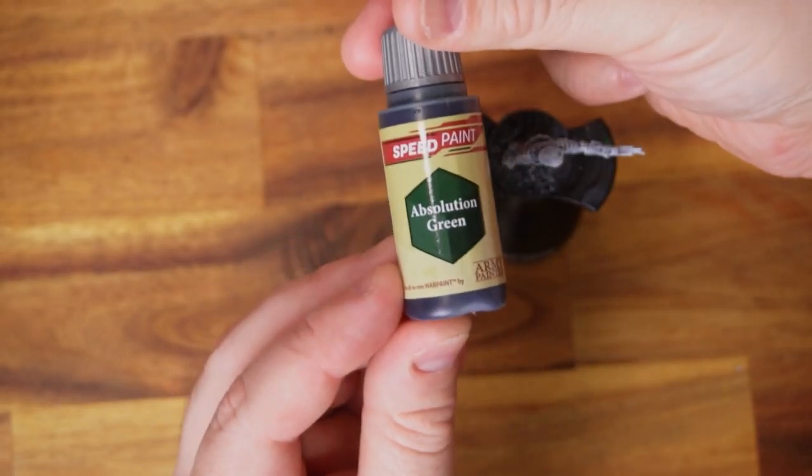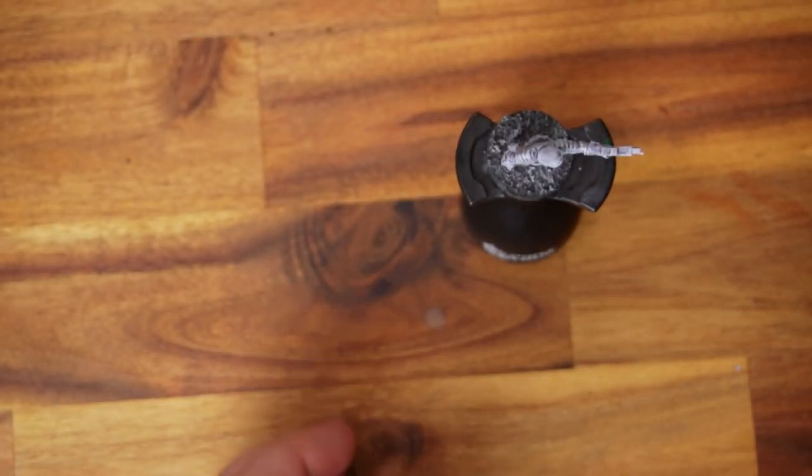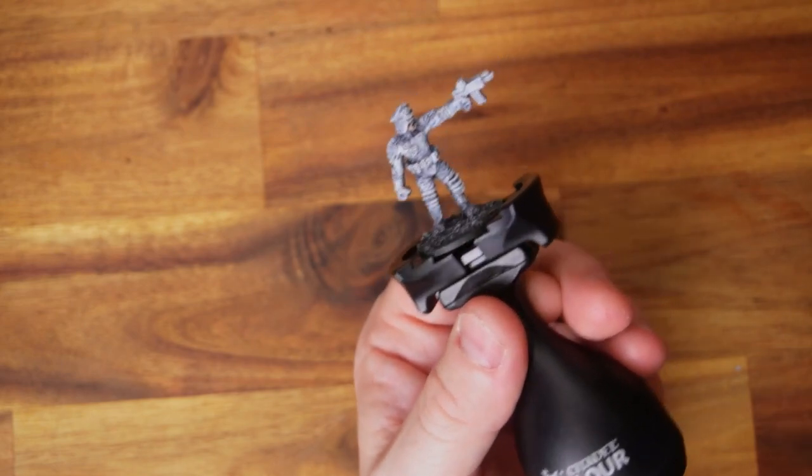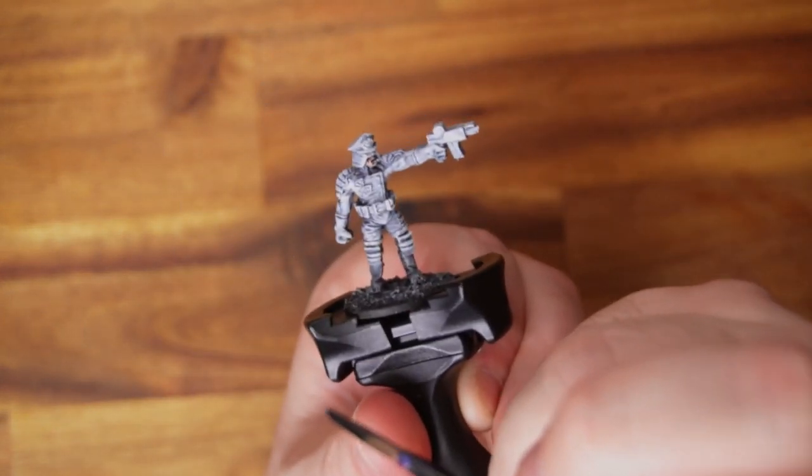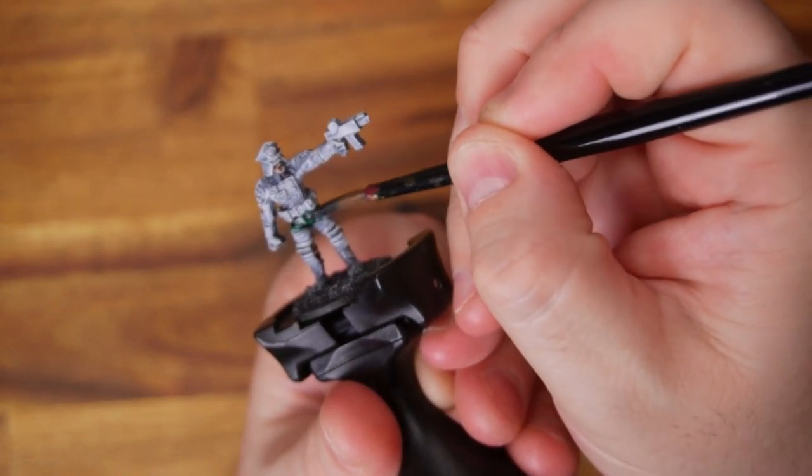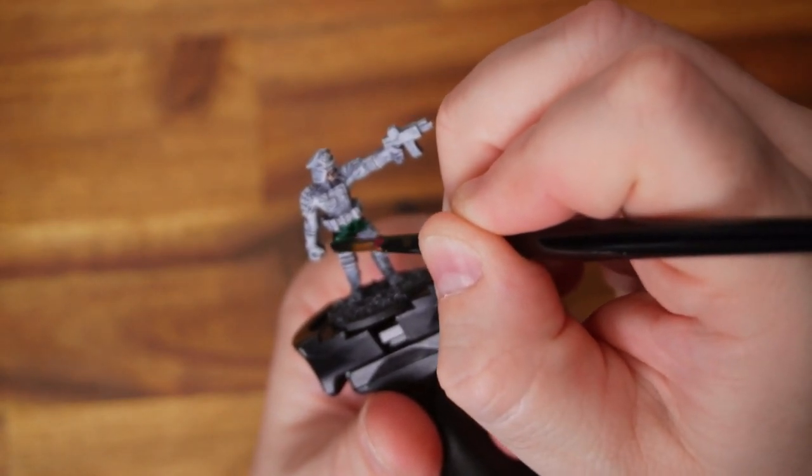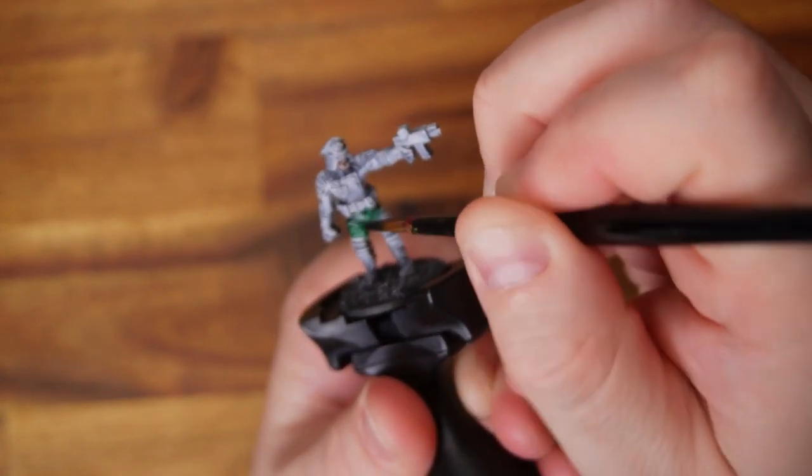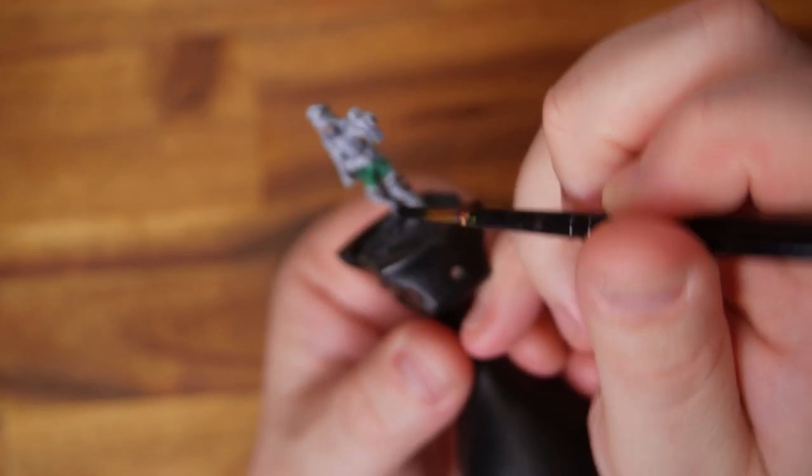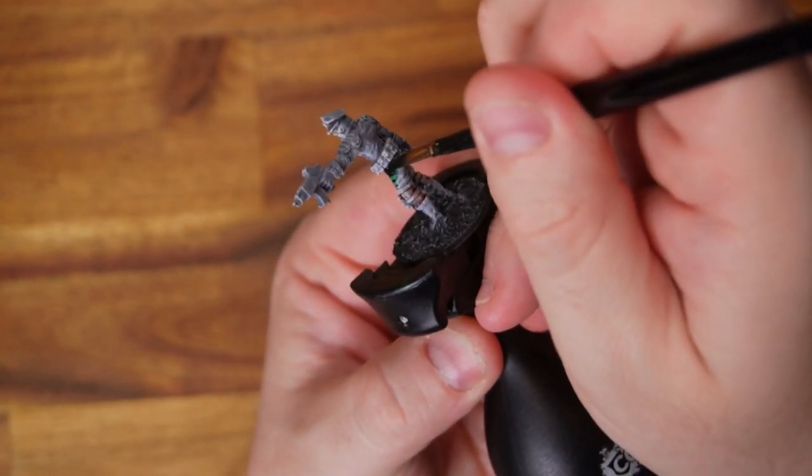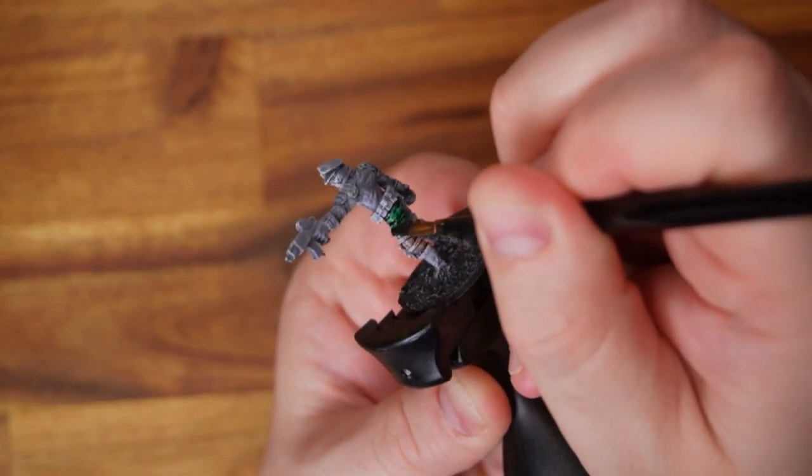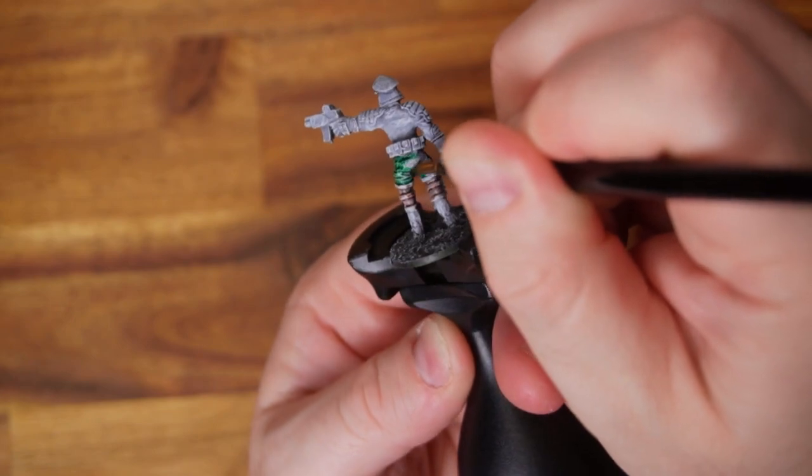Right, time to tackle the biggest part of the model: the uniform. We're going to use Absolution Green. It's hard to tell if it's a super dark green or if it's black with a hint of green, so I'm just going safe and picking this dark green that was designed for Dark Angels or Rangers of Middle Earth. It's a very nice foresty green color. I'm just putting this on quite heavily as you can see on the model.